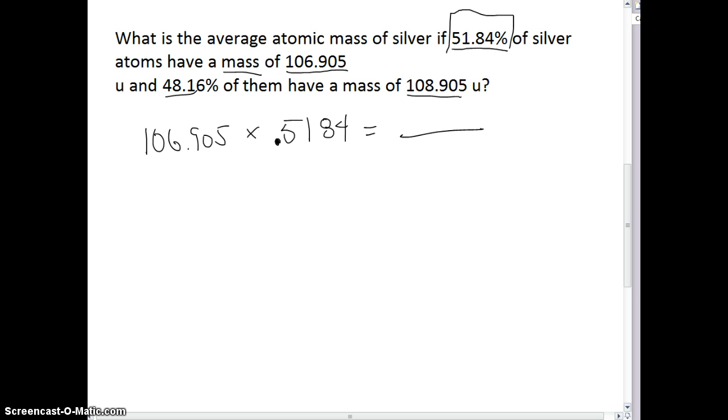Then I'm going to go down here, and I'm going to take my mass of 108.905. It's got a decimal, so I'm going to use it. I'm going to multiply it by, I'm going to move that decimal once again on that percentage there. We're going to call it 0.4816, and I'm going to get two answers, and then I'm going to add these two answers up. So let me go ahead and do that on my calculator right now.